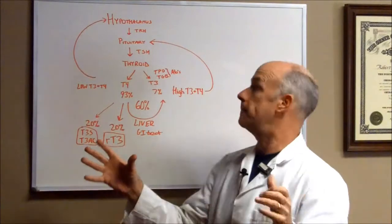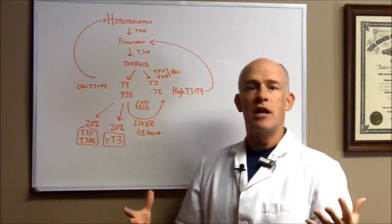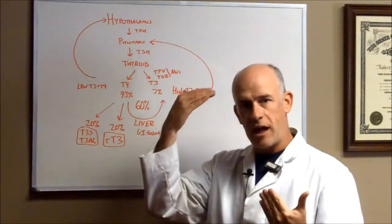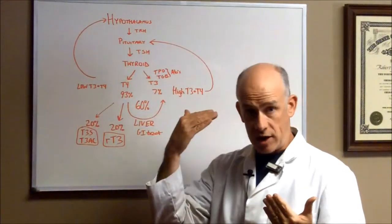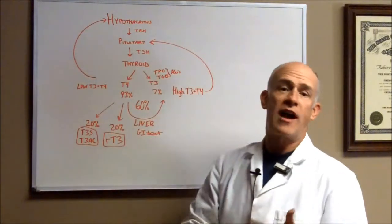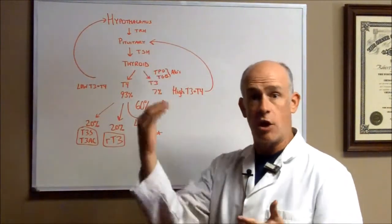So we're going to start first up in your brain. The hypothalamus, many call that the master gland. The hypothalamus is where this all starts. The hypothalamus tells your pituitary gland what to do. The hypothalamus sends out a hormone thyroid-releasing hormone, TRH.